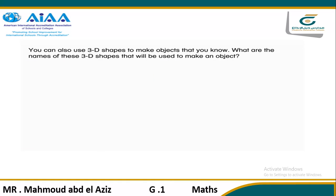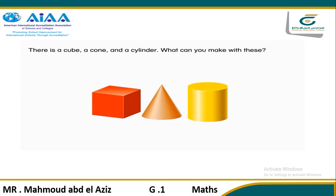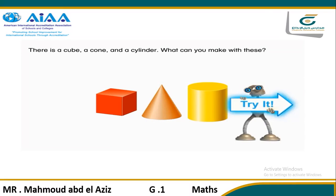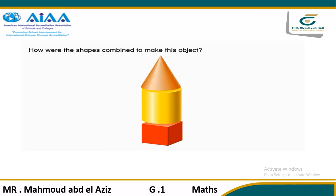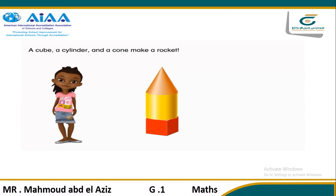You can also use 3D shapes to make objects that you know. What are the names of these 3D shapes that will be used to make an object? There is a cube, a cone, and a cylinder. What can you make with these? How were the shapes combined to make this object? They were stacked on top of each other. A cube, a cylinder, and a cone make a rocket.